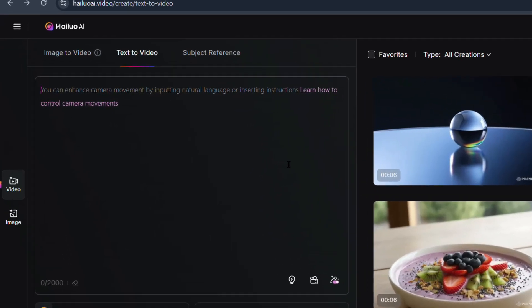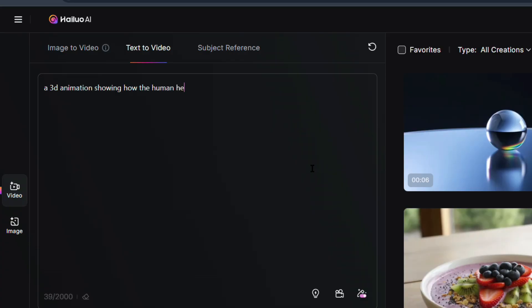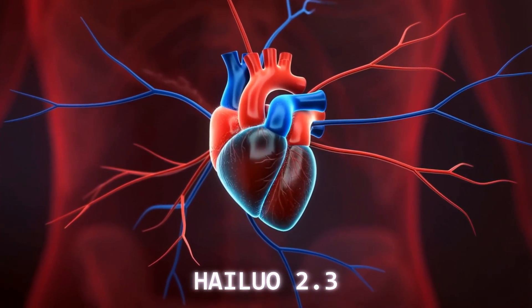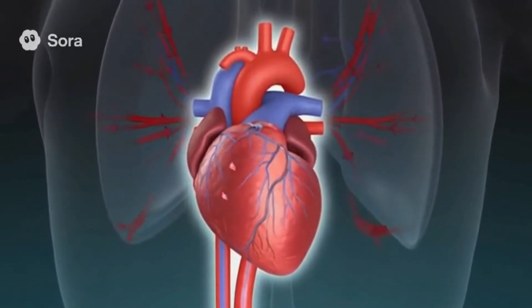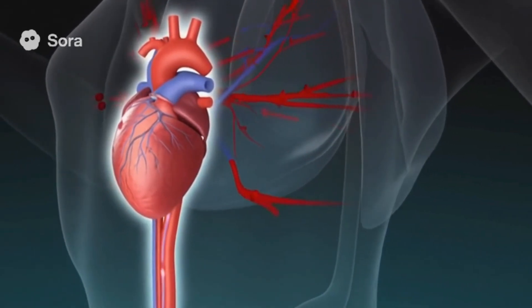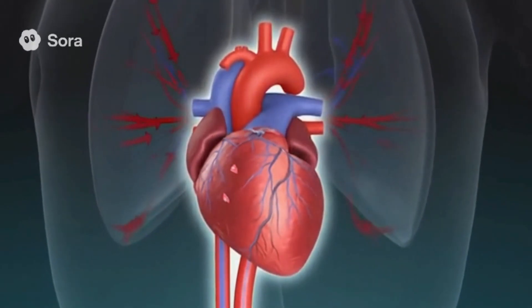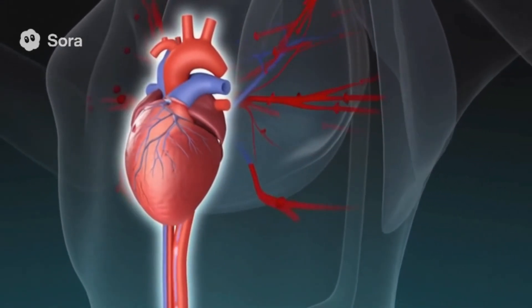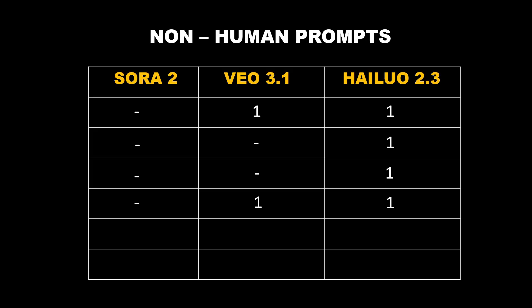For the final non-human test, I went with something a bit educational: 'A 3D animation showing how the human heart pumps blood through the body.' VO 3.1 couldn't generate it — it flagged the prompt as sensitive content. Sora 2 just blew me away. The anatomy, the motion, the fluid transitions — everything looked super realistic and perfectly synced. No doubt about it, Sora 2 totally takes the point this round.